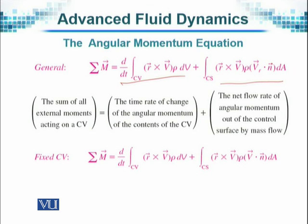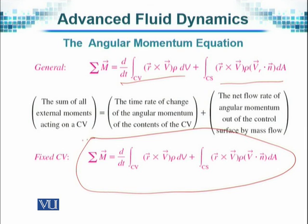So the sum of all external moments acting on a control volume is equal to the time rate of change of angular momentum of contents of the CV and that of the mass flow at the surface. For a fixed CV, the summation of all external moments is given by this equation.